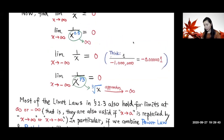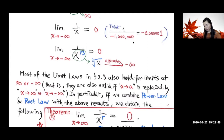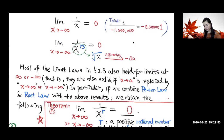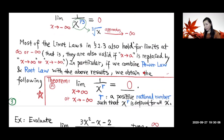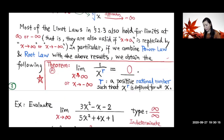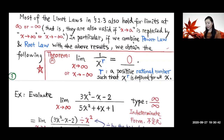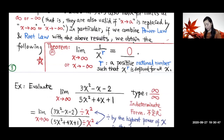Most of the limit laws in section 2.3 also hold for limits at infinity or negative infinity — that is, they are valid when 'x going to a' is replaced by 'x going to infinity' or 'x going to negative infinity.' Combining the power law and root law with the above results, we get Theme A: the function 1 over x^r, where r is a positive rational number such that x^r is defined, has limit equal to zero as x goes to positive or negative infinity.